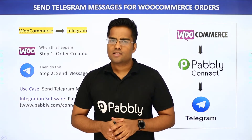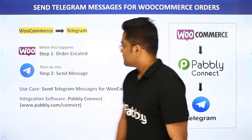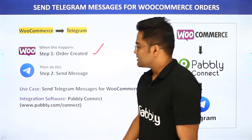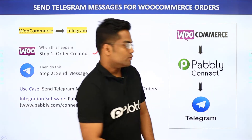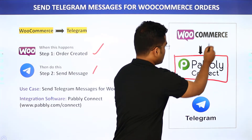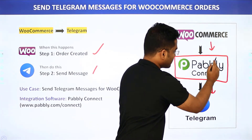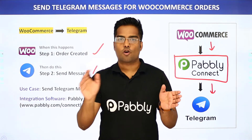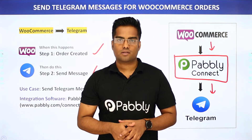The second approach is to bring in some automation. When a new order is created in WooCommerce, it will automatically send a message on Telegram. In this video we will be using Pabbly Connect to integrate WooCommerce and Telegram. The best part of using Pabbly Connect is there is no need for coding skills or programming knowledge. It can be done easily. Let me show you on my screen.